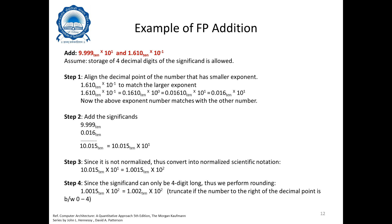1.0015 × 10² is a normalized number because there is no leading zero to the left of the decimal point. In the last step, since the significand can only be four digits long, we perform rounding. Because the digit '5' in 1.0015 is not between 0 and 4, we add plus one to the digit to its left.